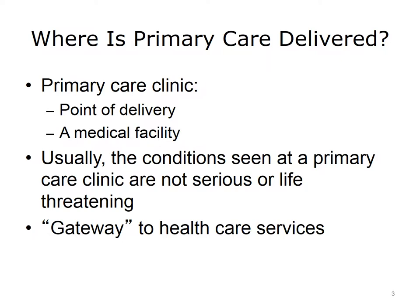As reviewed in the previous lecture, primary care represents a category of health services. Where are these health services delivered? The usual point of delivery is a primary care clinic, where the medical conditions seen are not serious or life-threatening. A primary care clinic may also be the gateway to other healthcare services. For example, after evaluation in a primary care clinic, the patient may be referred to a laboratory or diagnostic testing center, to an urgent care center, or even to an emergency room. The patient may also be referred to different clinical specialists.